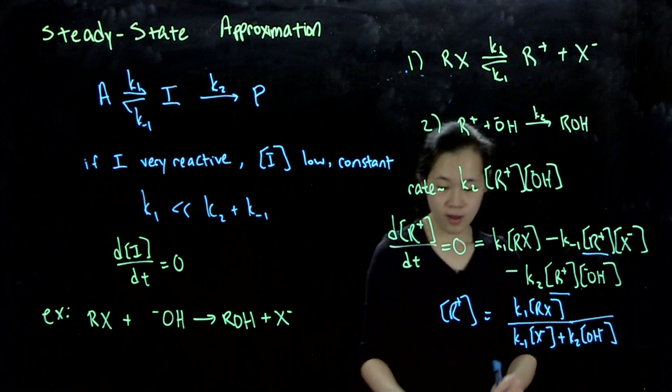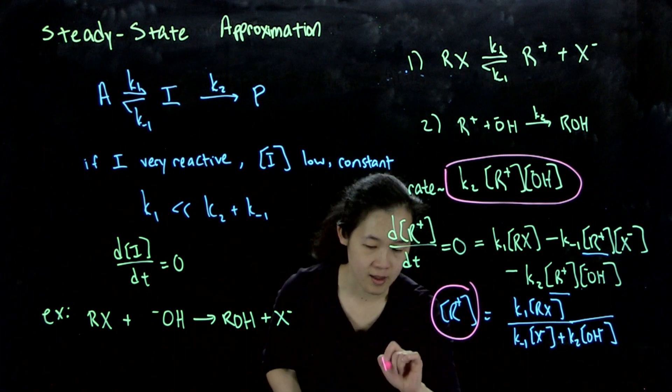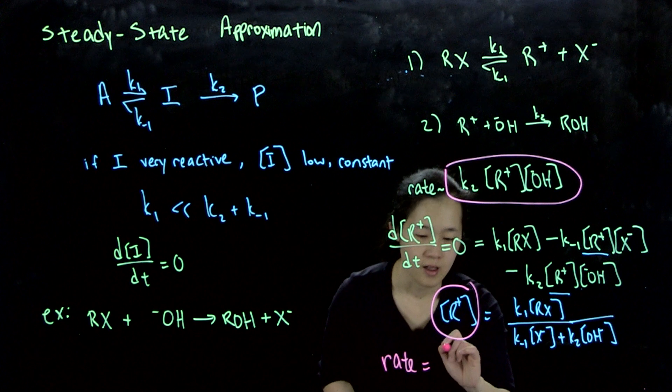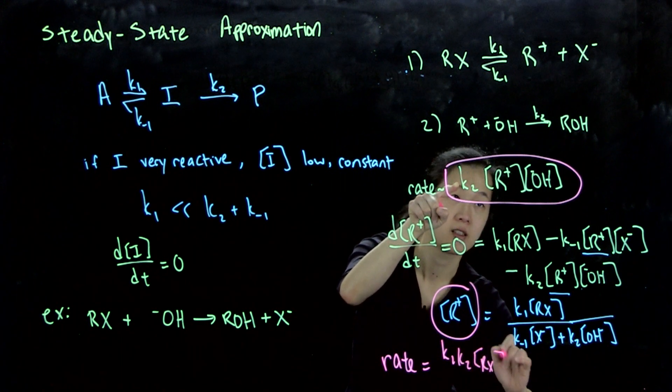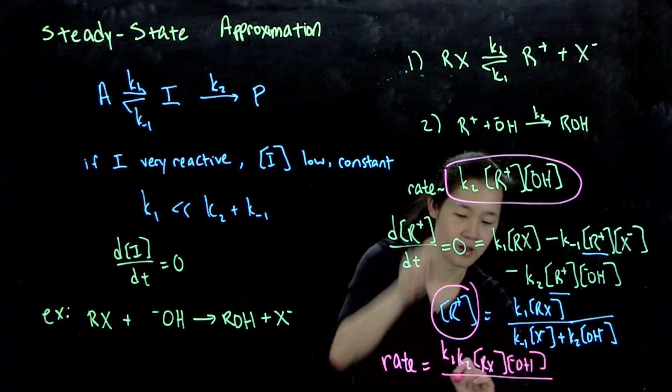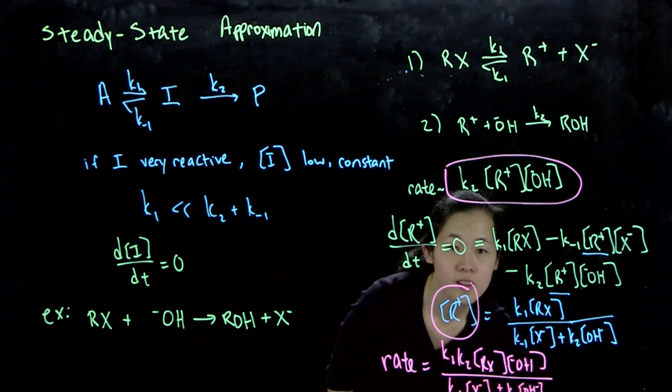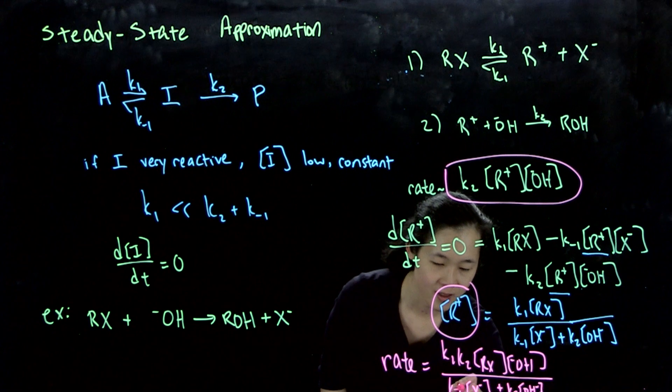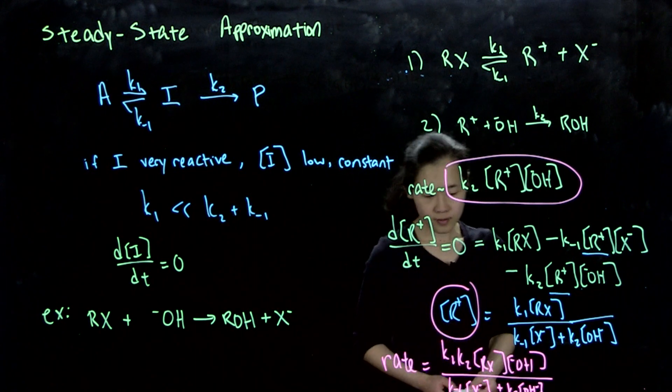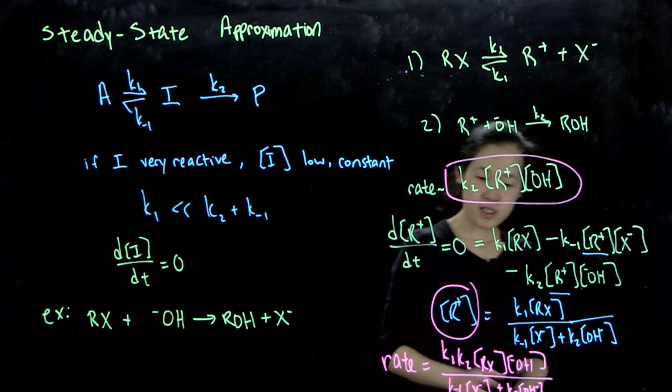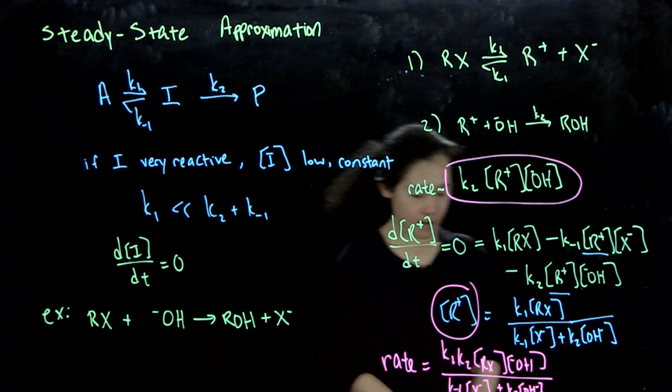And then our final rate expression, we substitute in our contribution of R+ into this rate law. So our overall rate has got to be, this is really, this means rate equals K1 K2 RX times OH minus over K minus 1 X minus plus K2 OH minus. That got a little cut off. This is a 2, this is a minus 1. So you can see this rate law is rather complicated. And that's from our steady state approximation. This kind of form, K1 K2 over K minus 1 plus K2, is typical for a steady state approximation rate law. But let's talk about what this actually means for us.